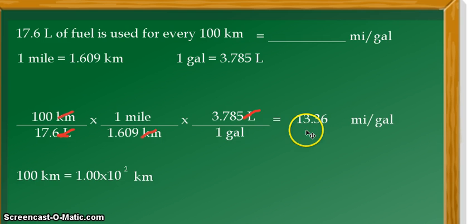Looking at our answer 13.36, obviously the 6 here, which is the fourth digit next to our third digit, is greater than 5. So we need to add one more. So the final answer is equal to 13.4 miles per gallon.